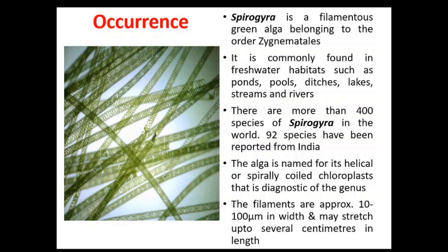Spirogyra is a filamentous green alga belonging to the order Zygnematales. In the photo, you can see the characteristic filamentous habit of Spirogyra. It is commonly found in freshwater habitats such as ponds, pools, ditches, lakes, streams, and rivers.